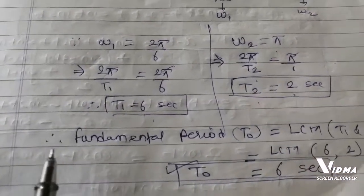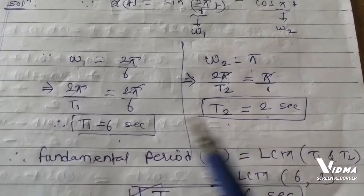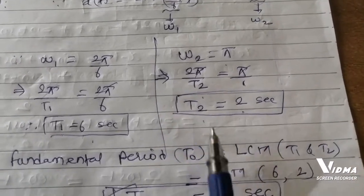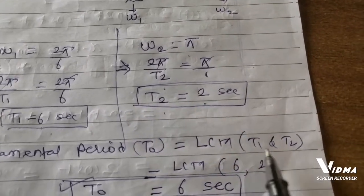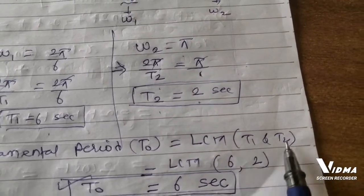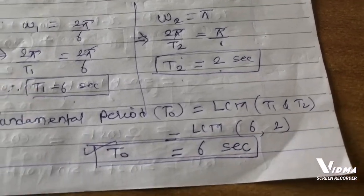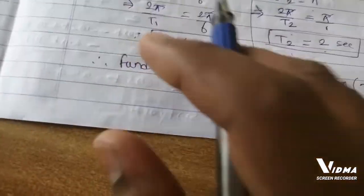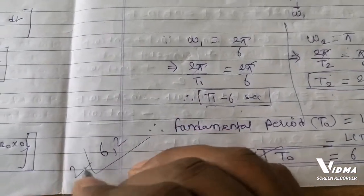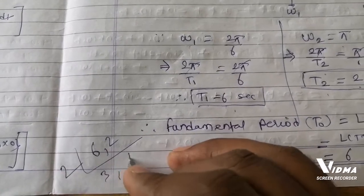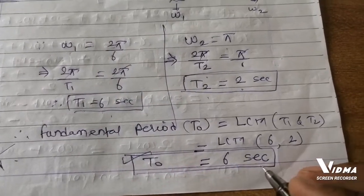Now let us calculate the fundamental period. When the time periods are more than one, we calculate the LCM. LCM of T₁ and T₂, which are 6 and 2. We have 2×3 = 6 and 2×1 = 2. Multiplying 2×3×1 gives 6. So T₀ = 6 seconds.